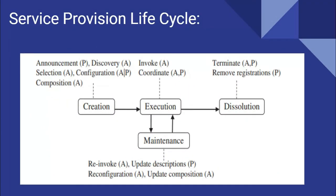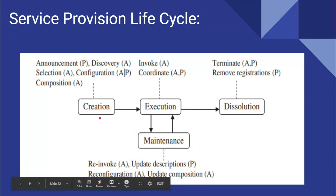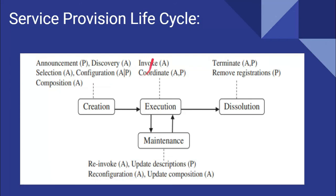The last point of unit one is the service provision life cycle. Regarding creation, there are five attributes: announcement of the service, discovery of the service, selection of the service, configuration, and then announcement and processing.